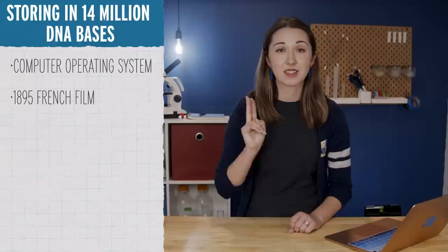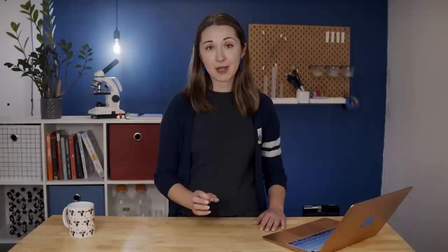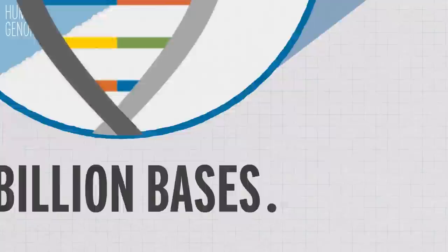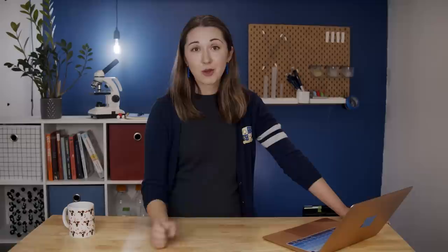The team was able to store a full computer operating system, an 1895 French film Arrival of a Train at La Ciotat, a $50 Amazon gift card, a computer virus, a pioneer plaque, and a 1948 study by information theorist Claude Shannon in a little over 14 million DNA bases. To put that into context, your human genome is 3.2 billion bases long. 14 million bases could fit onto a spec way smaller than the period at the end of a sentence. With this method, the team suggested that they could pack 215 petabytes of data into a single gram of DNA, which was way more dense than any other effort at the time. And to give that a little bit of context, 215 petabytes is like 1.5 billion Facebook photos. It's a lot of data.